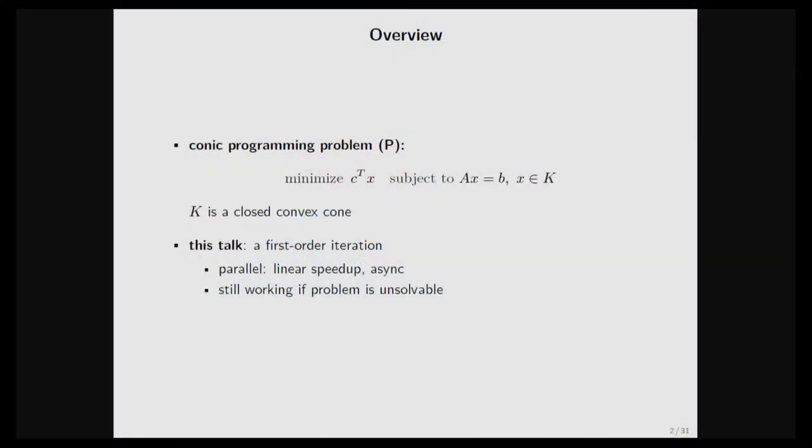When we talk about conic programming, something we cannot ignore is that lots of conic programs don't have solutions — they are either infeasible, or feasible but unbounded, where the objective can go to negative infinity. It turns out the simple first-order iteration also works in those cases, and I'll tell you why it works and what I mean by 'working.'